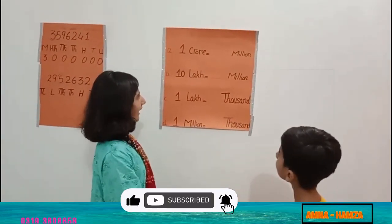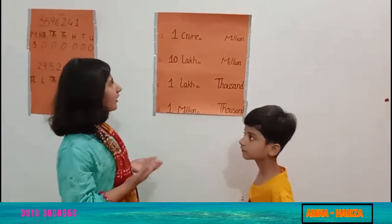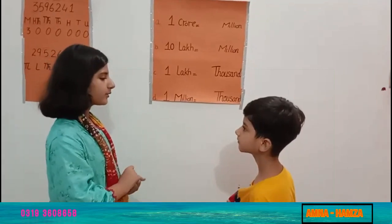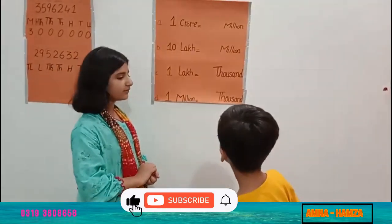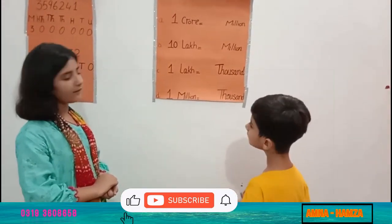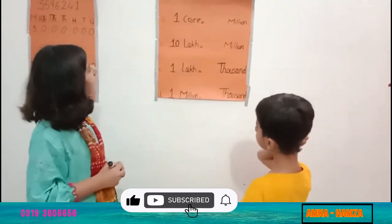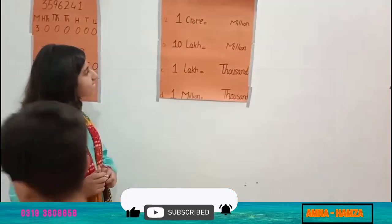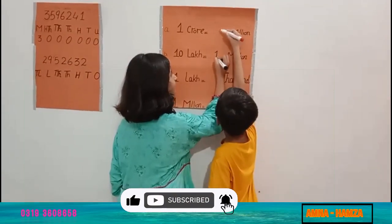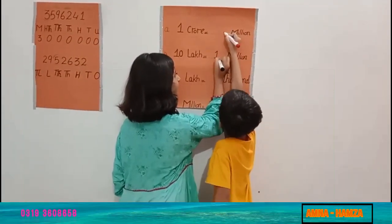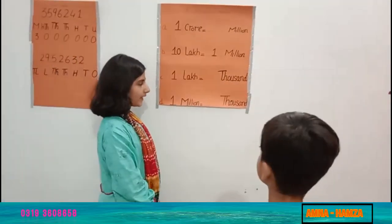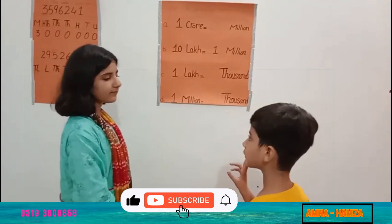Complete the following and remember: 1 crore equals dash million — 10 million. 10 lakh equals dash million — it is 1 million. 1 lakh equals dash thousand — 100 thousand.